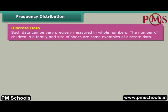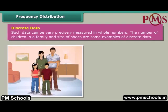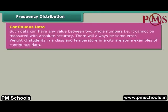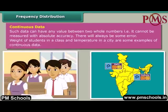Discrete data can be very precisely measured in whole numbers. The number of children in a family and size of shoes are some examples of discrete data. Continuous data can have any value between two whole numbers — that is, it can be measured with absolute accuracy, though there will always be some error. Weight of students in a class and temperature in a city are some examples of continuous data.